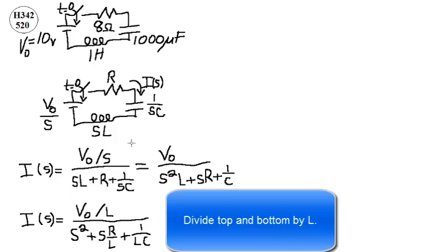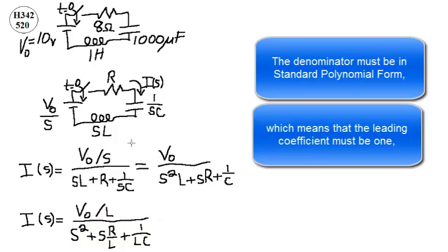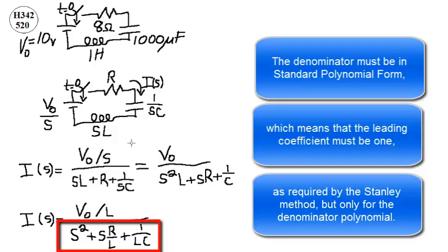Divide top and bottom by L. The denominator must be in standard polynomial form, which means that the leading coefficient must be 1, as required by the Stanley method, but only for the denominator polynomial.